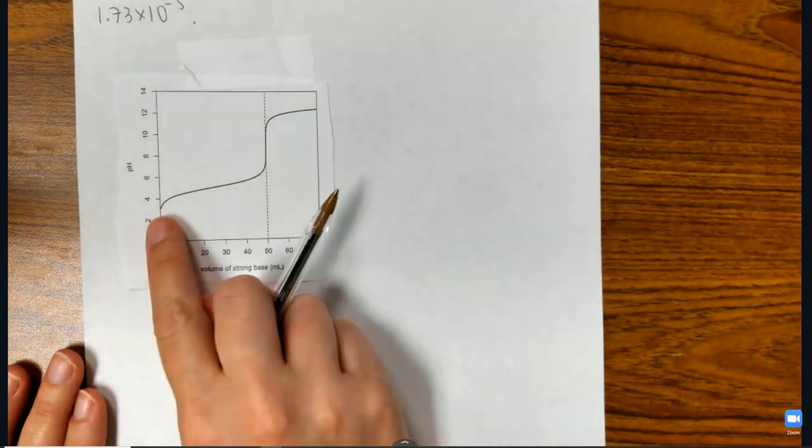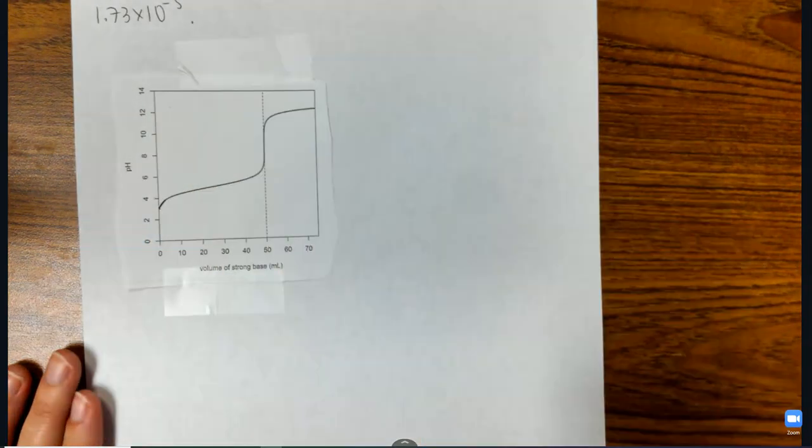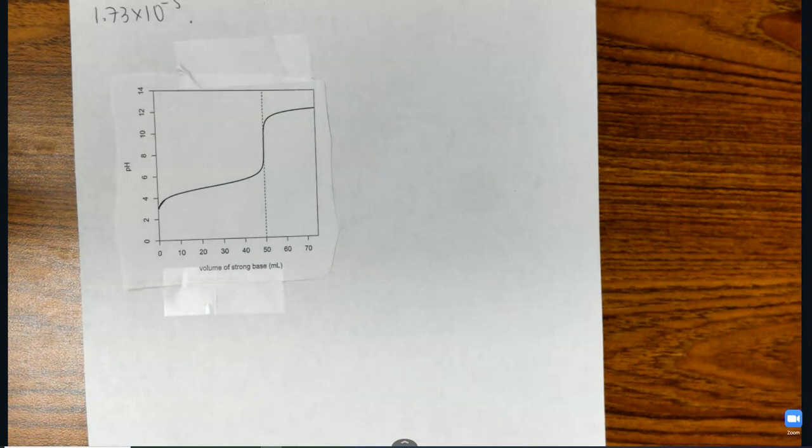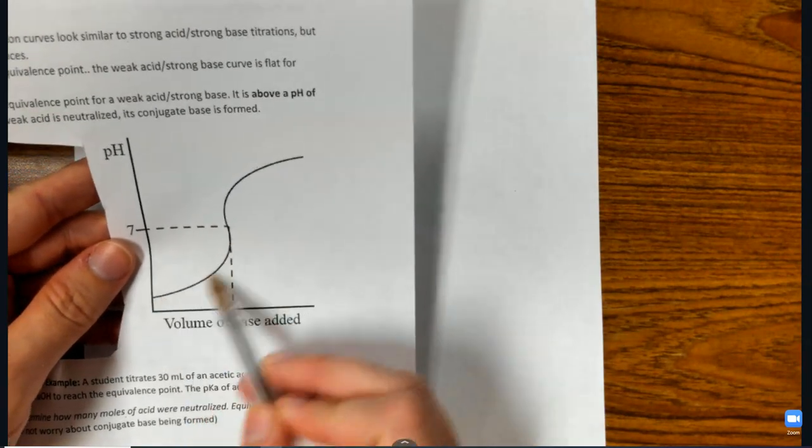The weak acid-strong base titrations will look like this, where it'll start to go up and they flatten out. Versus a strong acid-strong base will look like this, where you see it just goes up.